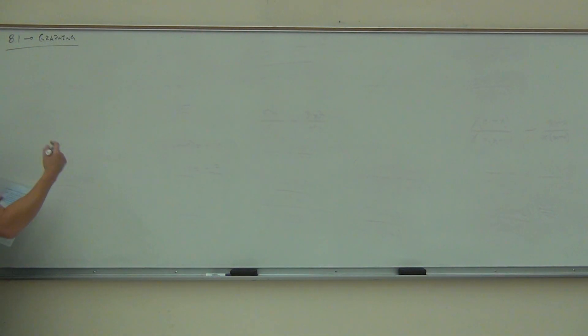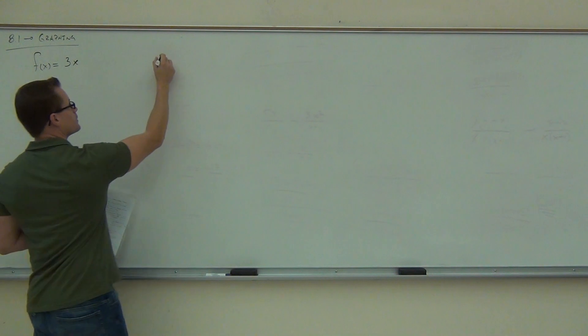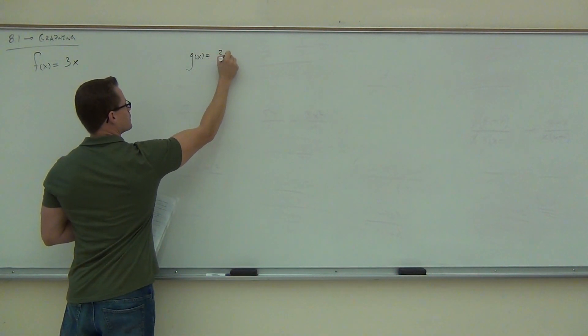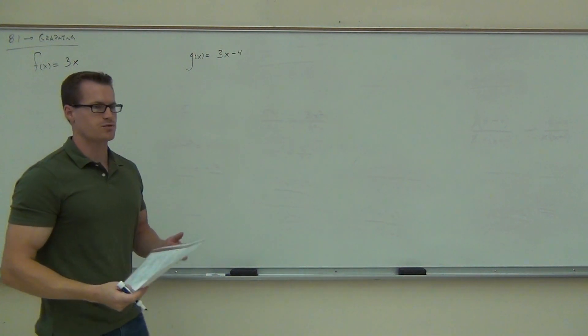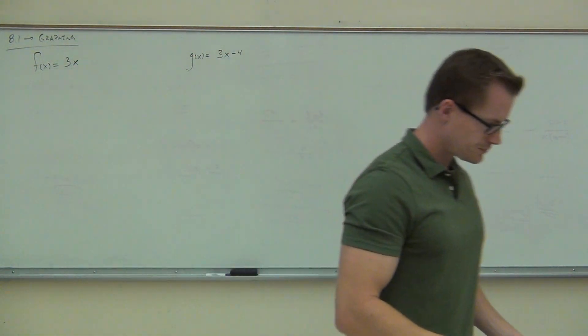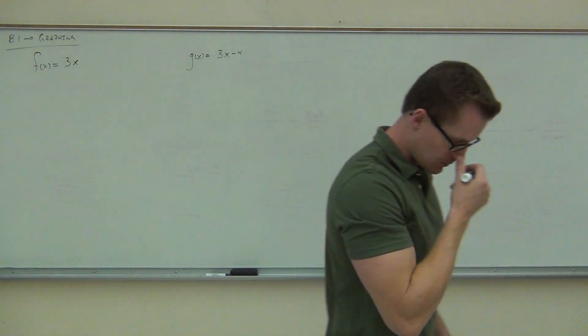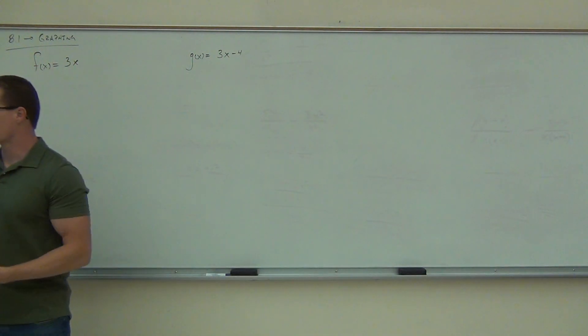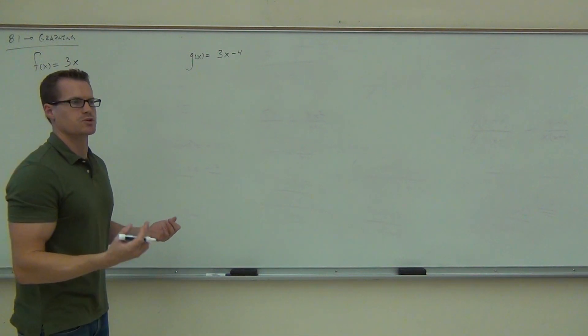In our first example, I'd like to graph a couple things. We're going to graph - you're familiar with that notation. We've already had that in this class. It just means f of x. It means a function. This thing's going to make a graph for us. f of x equals 3x. g of x equals 3x minus 4. What we're going to do is graph these functions on the same graph, and we're going to use some tables to make this up.